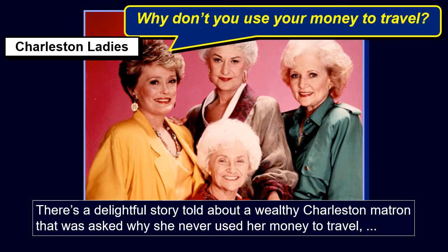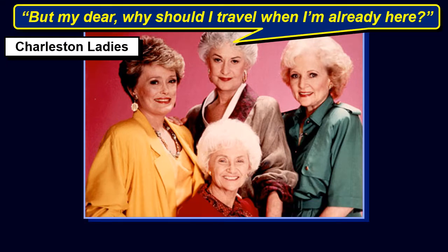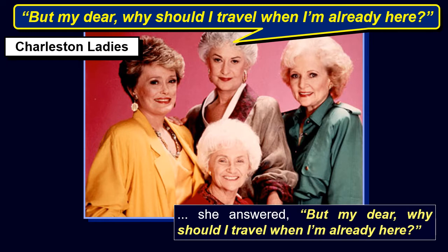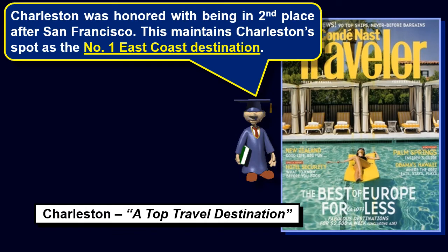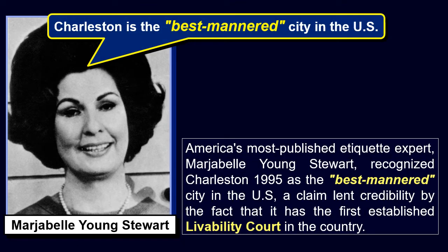There's a delightful story told about a wealthy Charleston matron who was asked why she never used her money to travel. She answered, 'But my dear, why should I travel when I'm already here?' For the 17th consecutive year, readers of Condé Nast Traveler magazine designated Charleston a Top 10 Travel Destination in the U.S., maintaining Charleston's spot as the number one East Coast destination. America's most published etiquette expert, Marjable Young Stewart, recognized Charleston in 1995 as the best-mannered city in the U.S., a claim lent credibility by the fact that it has the first established livability court in the country.